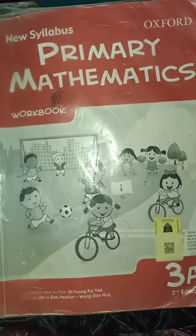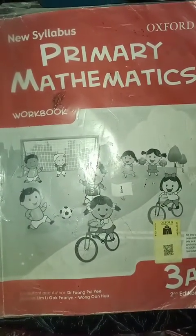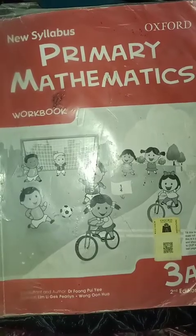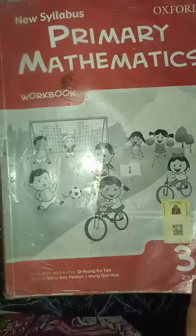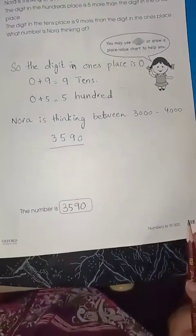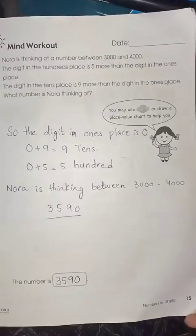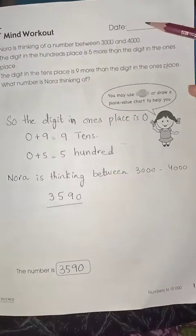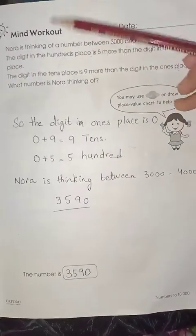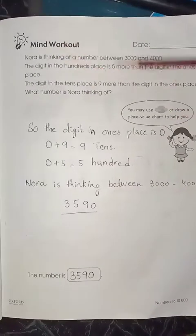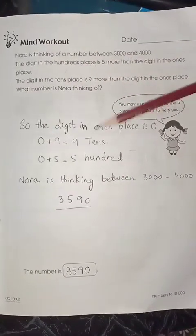Assalamu alaikum everyone. So today we are going to start chapter number one, book 3a. Page number 15. We have already done till page number 14, so today we are going to start page number 15. Write the date. Page number 15 is mind workout. Here you have to read the question and answer by yourself.